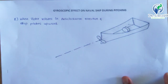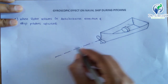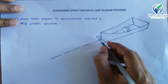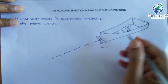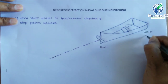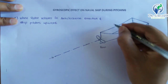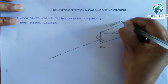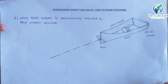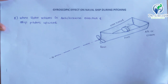First of all, let us see what is the meaning of pitching. We know that if we see this is the direction of viewing, then the front end of the ship is known as a bow and the rear end is known as aft or stern. The right side is known as the port side and the other is starboard. This is our rotor. We will see four cases for the rotation of rotor and pitching upward and downward motion.